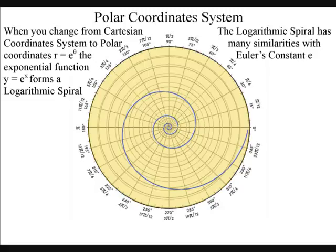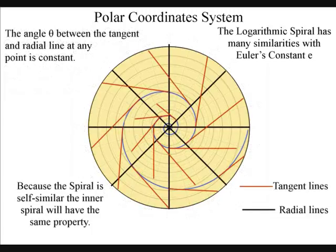This can be seen if we draw a tangent line of the spiral in red. The radial lines that started from the center point of the spiral are in black. What we find is the angle between any pair of these two lines will be the same, and since it is self-similar, the inner spiral will have the same property.